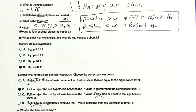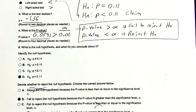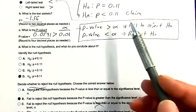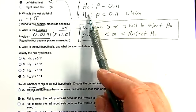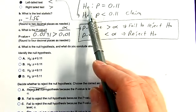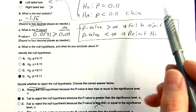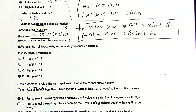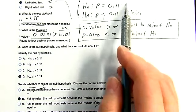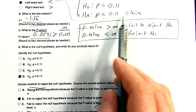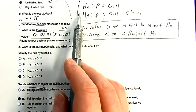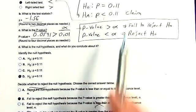This is where students tend to get tripped up. If you don't write which claim you have, this next part is hard. Their claim was the alternative, but we are not rejecting the null — our evidence is pointing to the null, which means we are not going to support their claim.